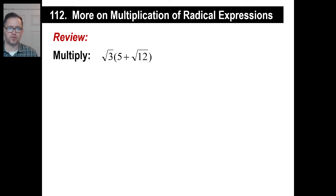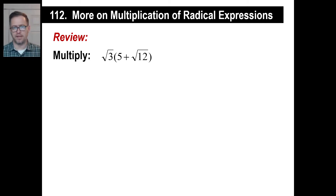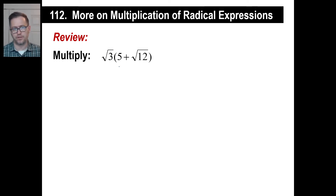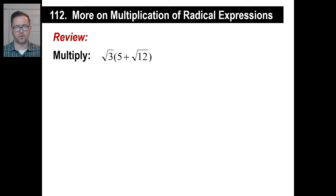Hey guys, let's take a look at multiplying — a little bit of a twist on something we've done before many times. You know how to distribute, right? We know how to do distribution even with things like fractions or square roots. So let's go back and do an oldie. If you have the square root of 3 on the outside and distribute it through, you'll have the square root of 3 times 5, which gives you 5 square root of 3. Then we'll have the square root of 3 times the square root of 12.